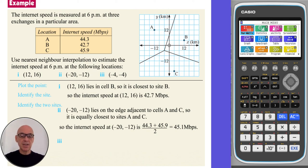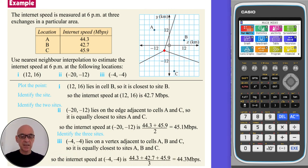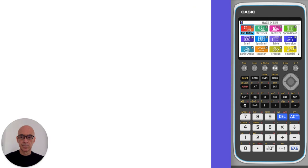In part 3, plotting the location (−4, −4), we see that this point lies on a vertex adjacent to cells A, B and C, so it is equally closest to sites A, B and C. So we estimate the internet speed at this location by averaging the internet speeds at sites A, B and C, as shown, giving a speed of 44.3 megabytes per second.